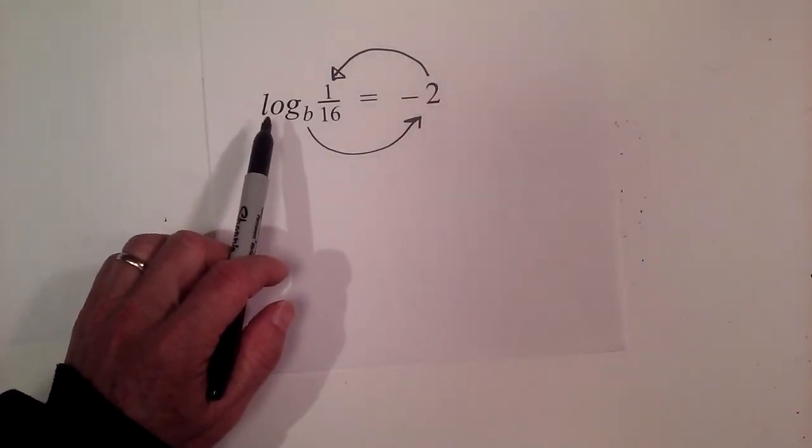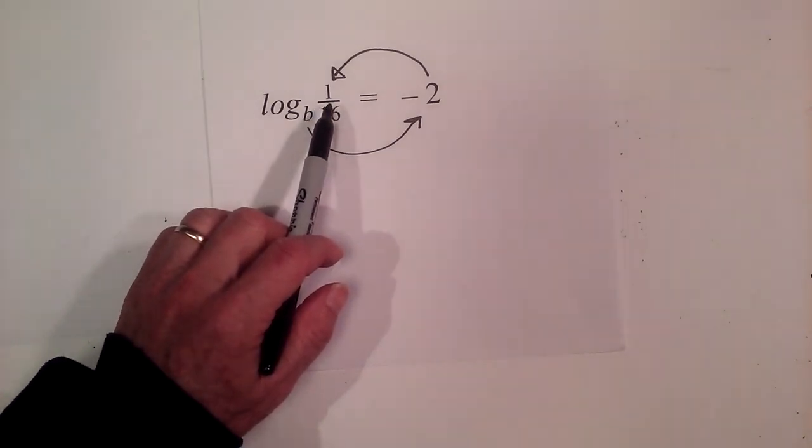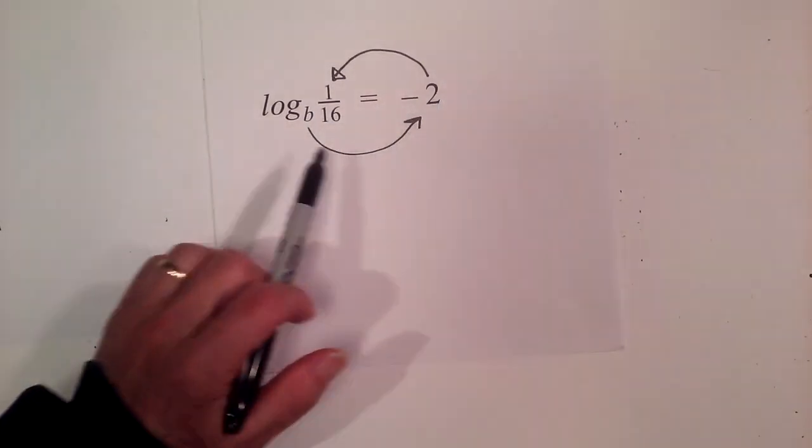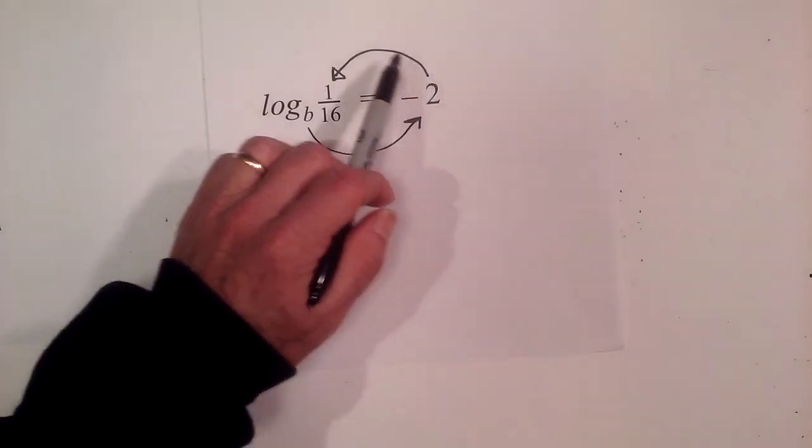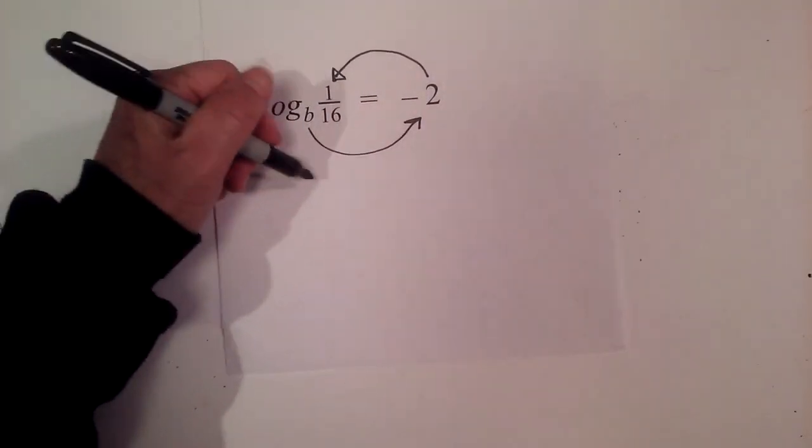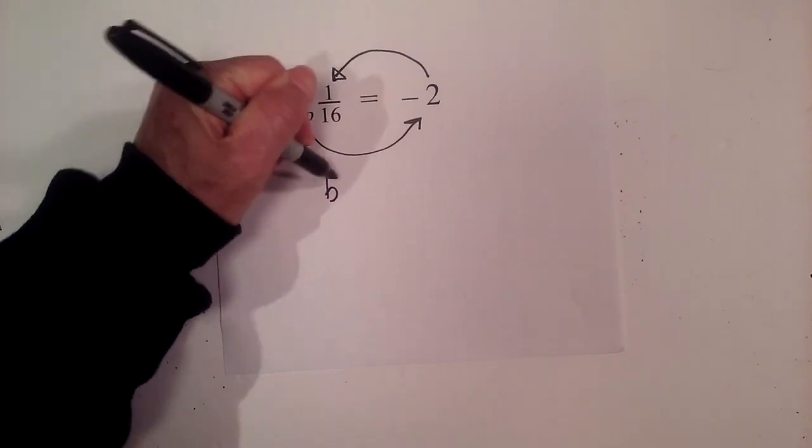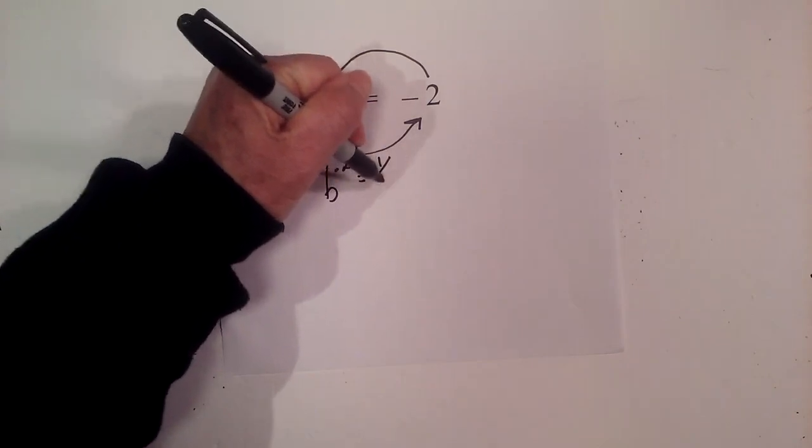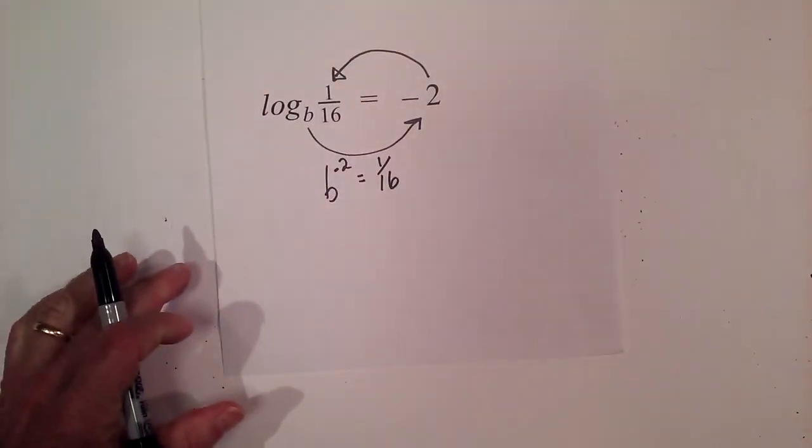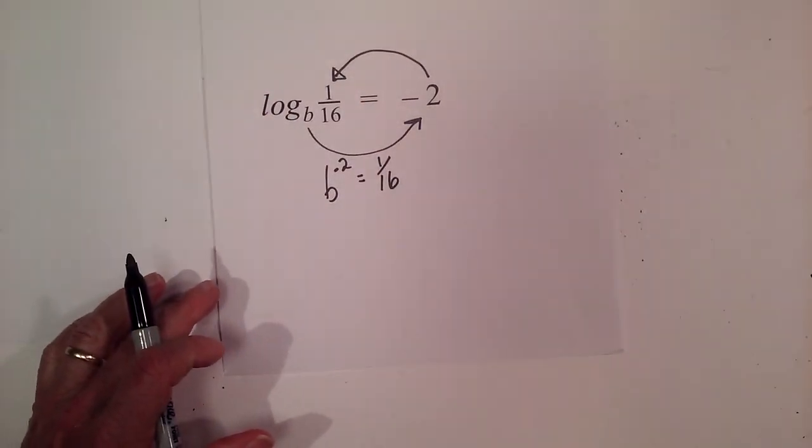We have log base B of 1/16 equals negative 2. So B raised to the negative 2nd power equals 1/16. I'll rewrite that: B^(-2) = 1/16.